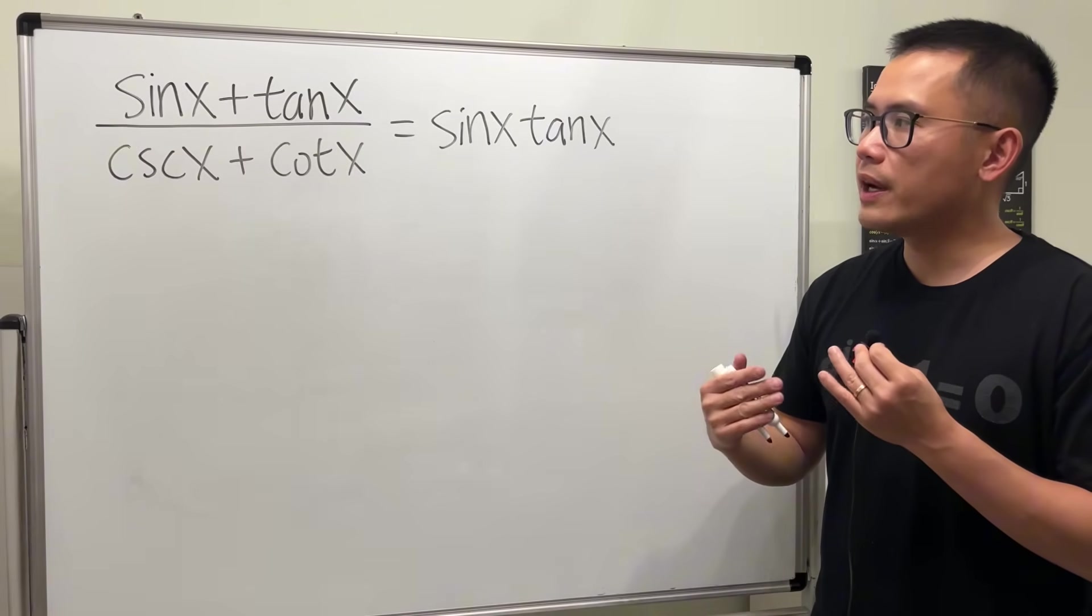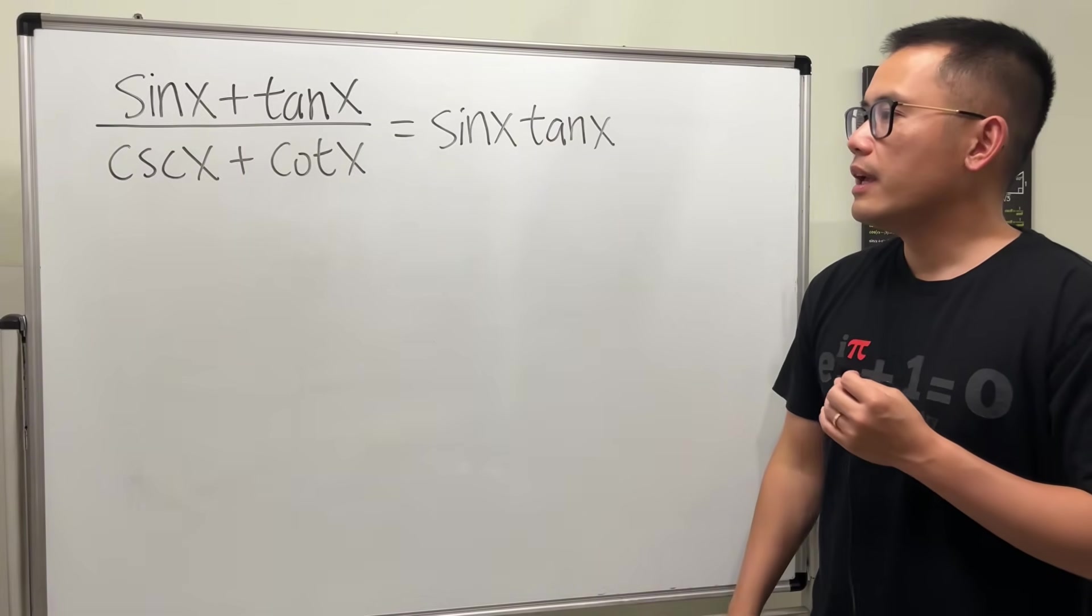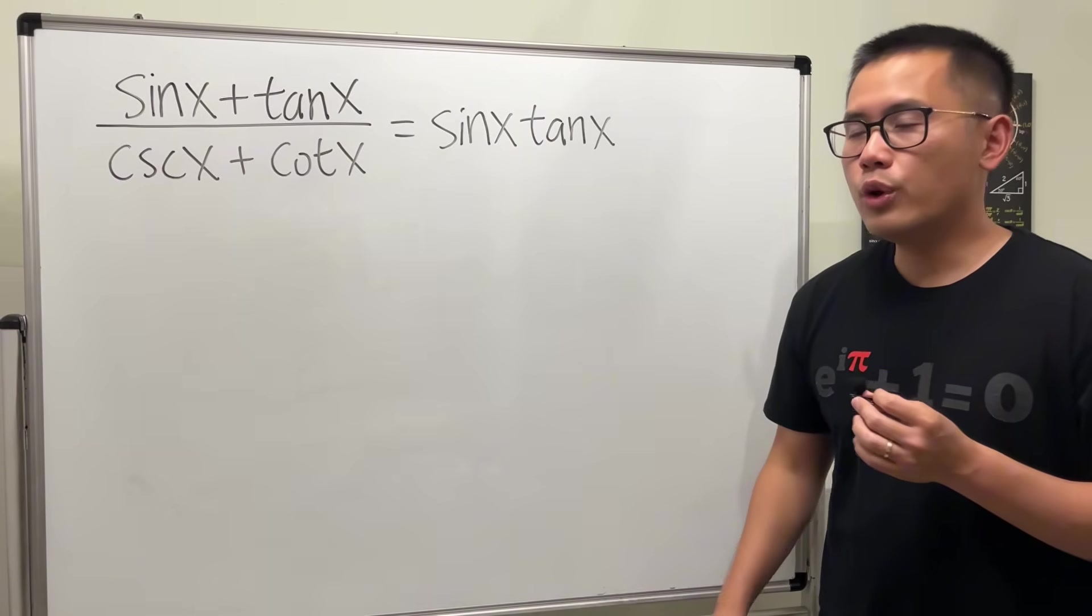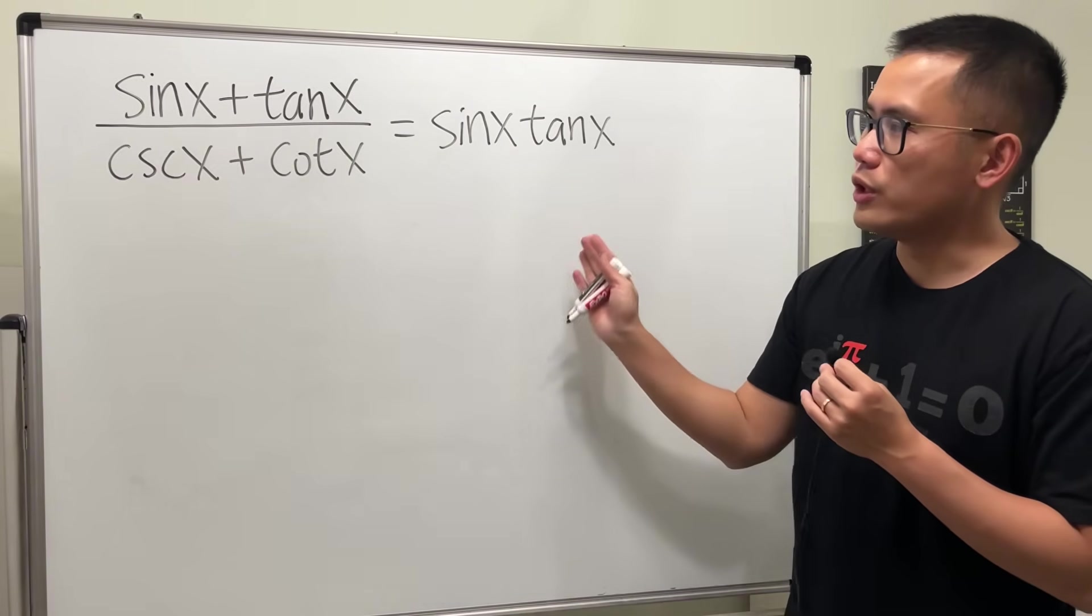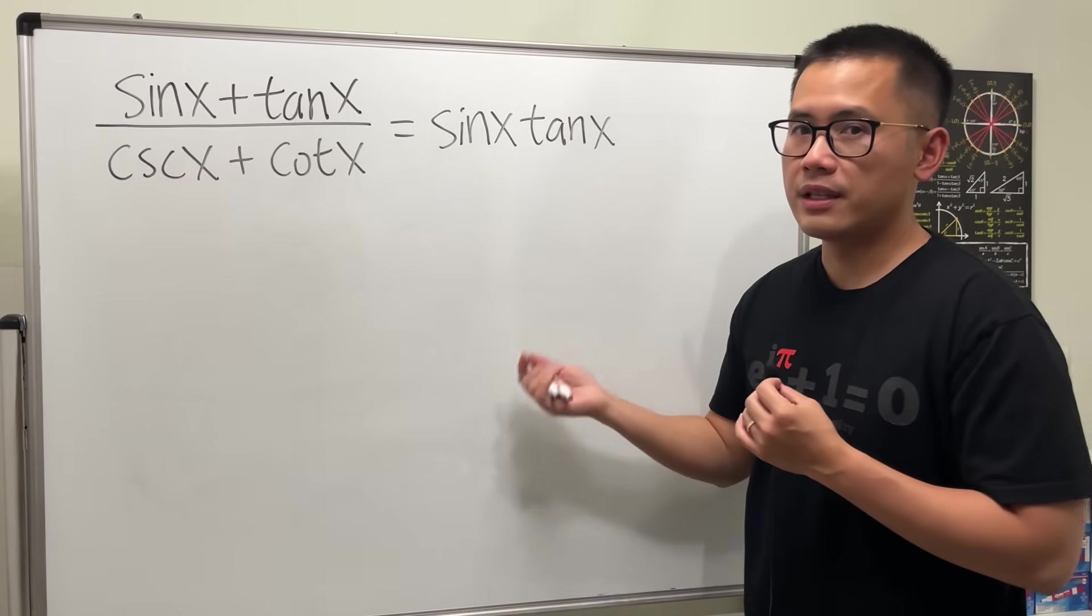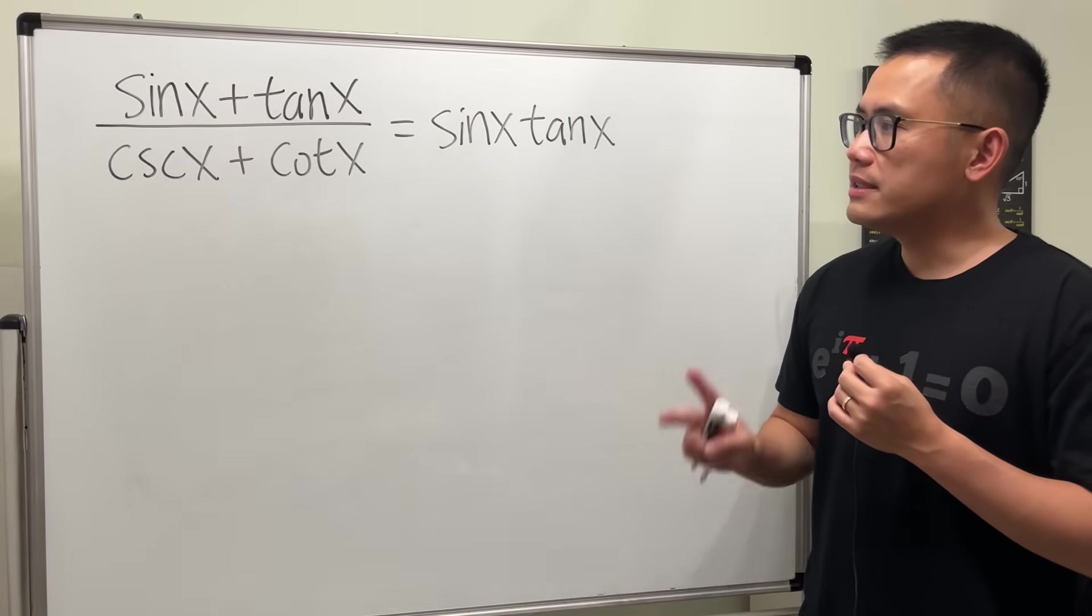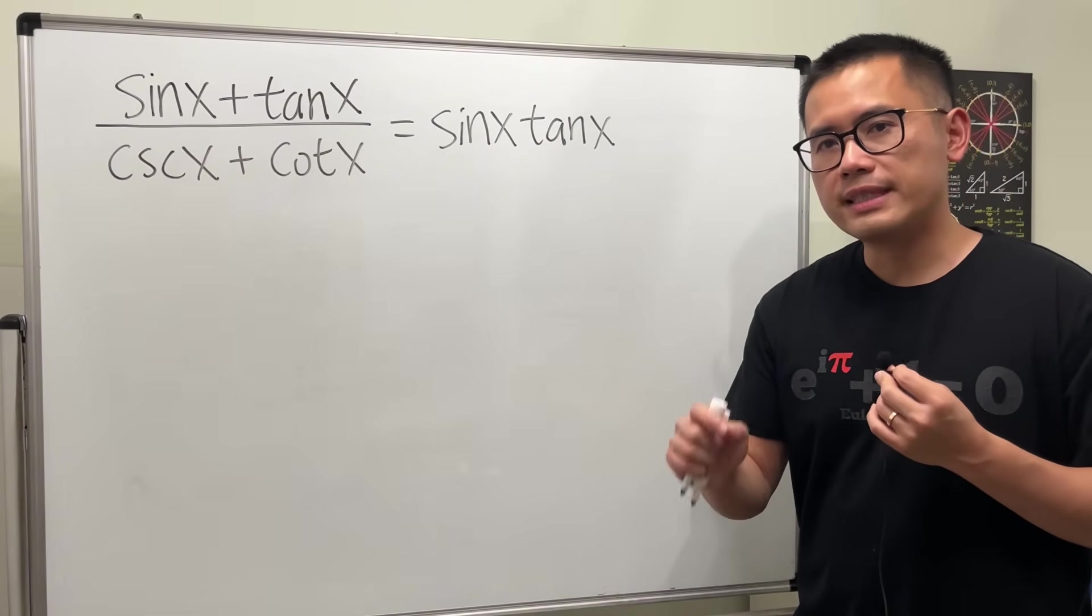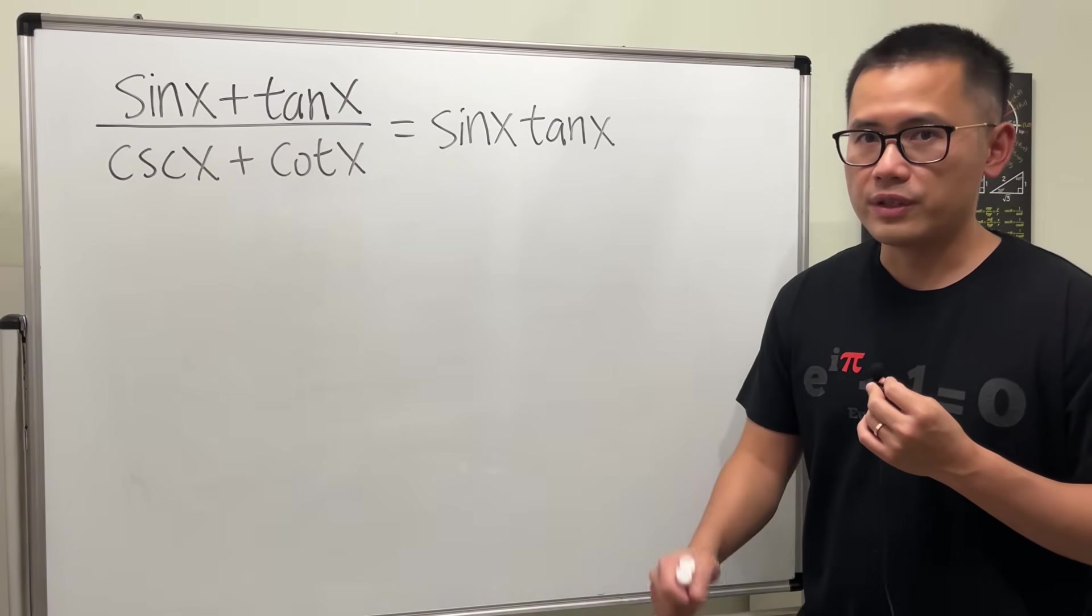This is called verifying a trig identity, and there are two main things to keep in mind. First, pick one side of the equation and work with it, then show that it ends up being the other side. Second, whenever you're doing this, try to work with sine and cosine only and hope for the best.